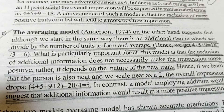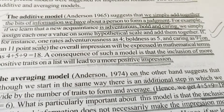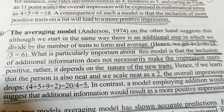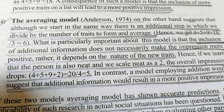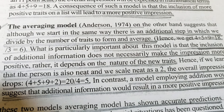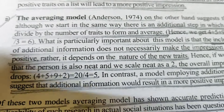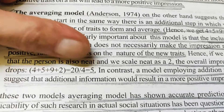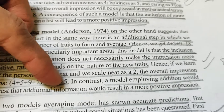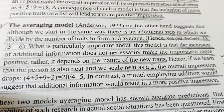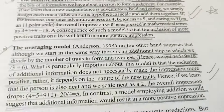The second model is the Averaging Model, also given by Anderson in 1974. This model says that if we have 3 characteristics and a fourth one is added, it will not increase the impression — it may actually reduce it. Instead of adding, we divide the total points by the number of traits. So if there are extra positive characteristics, the average may be less positive than with just 3. This is the averaging model.